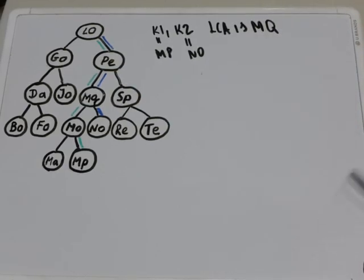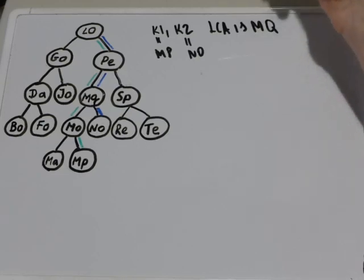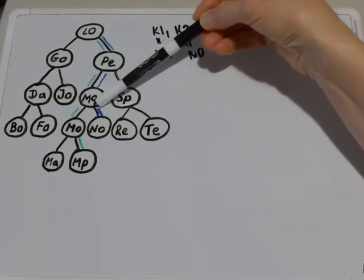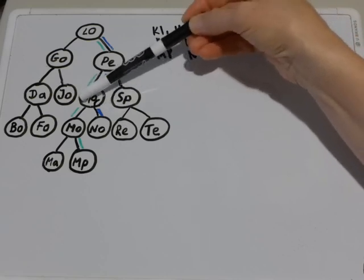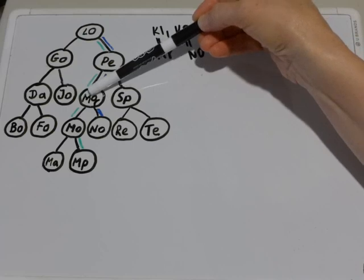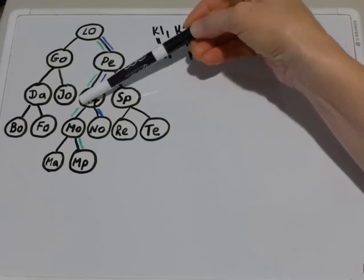How do we find it? We use the property of binary search tree and we use this observation that the lowest common ancestor is the last node at which the paths were the same